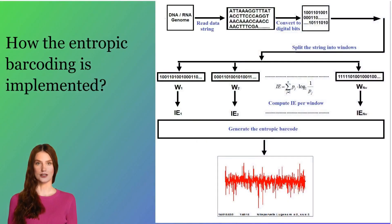How the Entropic Barcoding is implemented: First, the genomic sequence file is formatted into a text file containing only a string of nucleotide characters. Second, the formatted genome text file is converted into a string of bits. Third, the string of bits is split into windows.